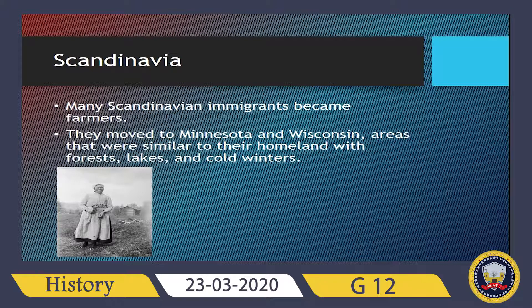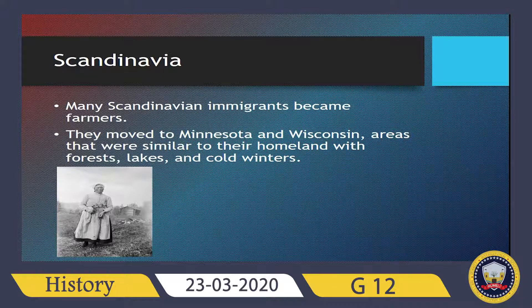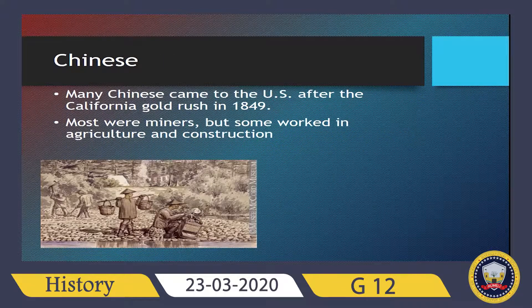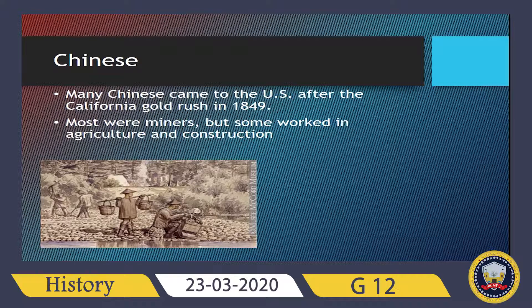Many Scandinavian immigrants became farmers. They moved to Minnesota and Wisconsin — areas that were similar to their homeland with forests, lakes, and cold winters. Chinese immigrants came to the United States after the California Gold Rush in 1849. Most were miners, but some worked in agriculture and construction.